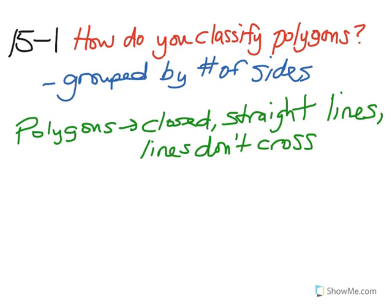So to recap, we classify polygons, which means we group them. We group them by the number of sides. And polygons must be closed. They must have straight lines, and the lines cannot cross. Next you're going to watch the visual learning video on the Pearson website.